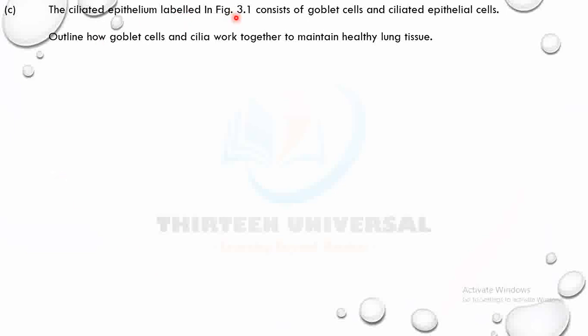The ciliated epithelium labelled in figure 3.1 consists of goblet cells and ciliated epithelial cells. Outline how goblet cells and cilia work together to maintain healthy lung tissue. Goblet cells secrete mucus. The mucus traps pathogens and acts as a physical barrier between pathogens and the lining of the airways.